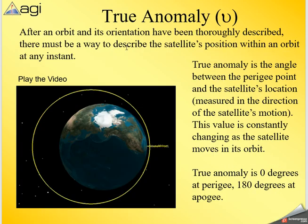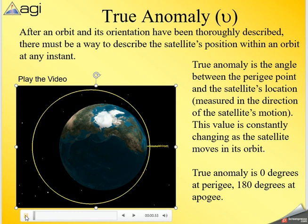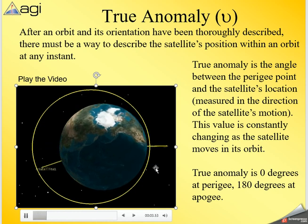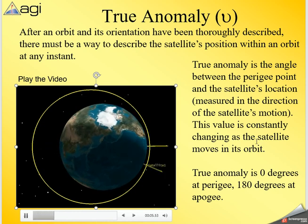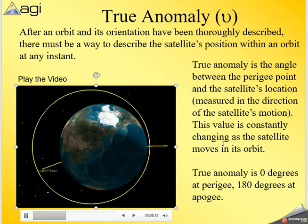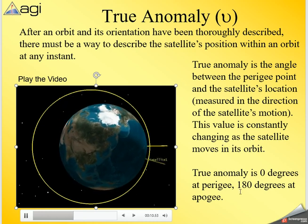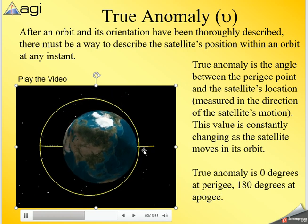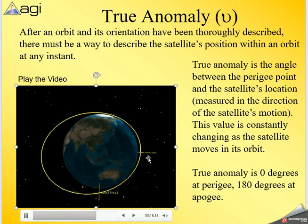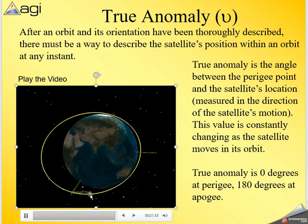True anomaly: after an orbit and its orientation are fully described, we need a way to describe the satellite's position within that orbit. True anomaly is the angle between the perigee point and the satellite's current location, measured in the direction of motion. This value constantly changes as the satellite moves — zero degrees at perigee, 90, 180 at apogee, 270, and back to zero.